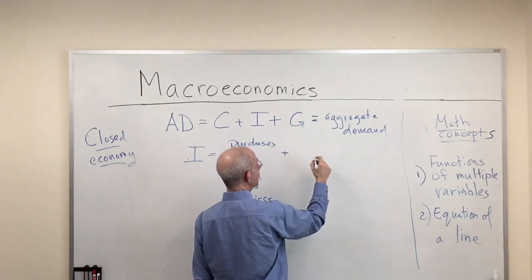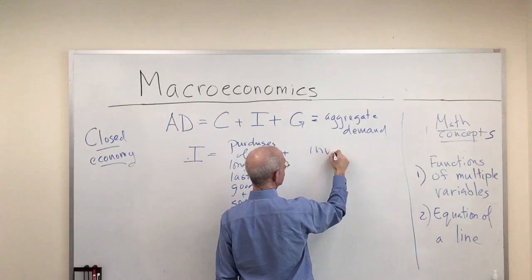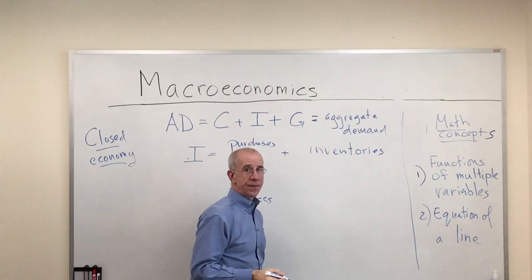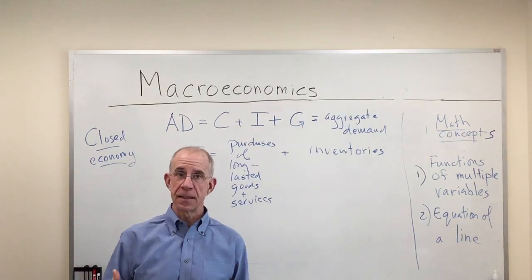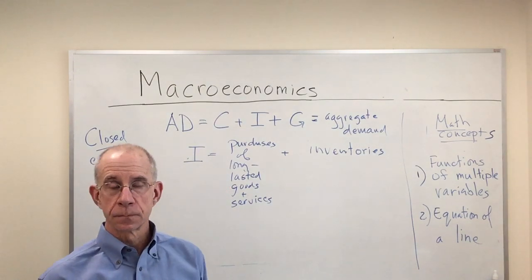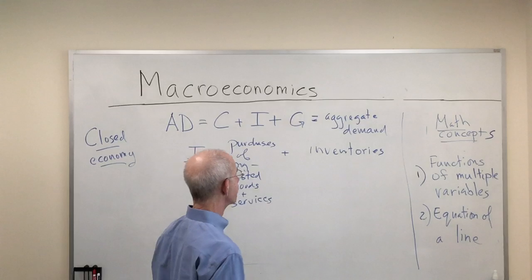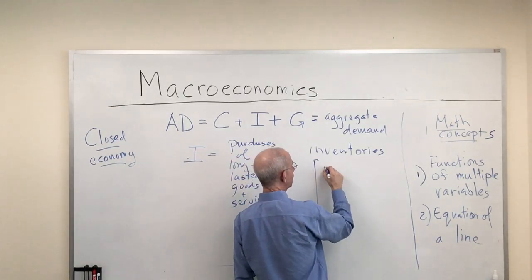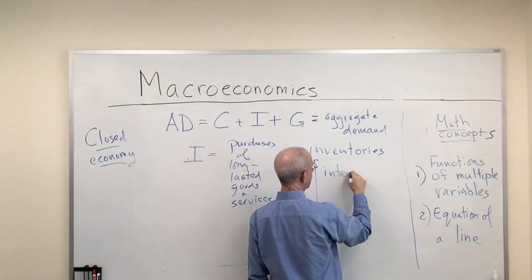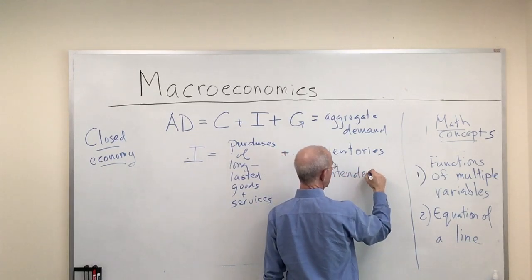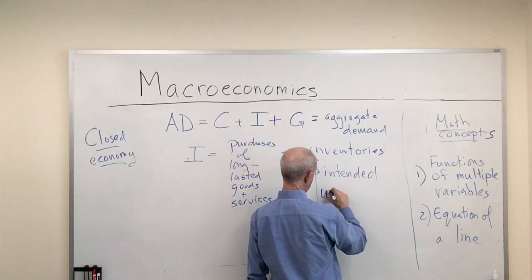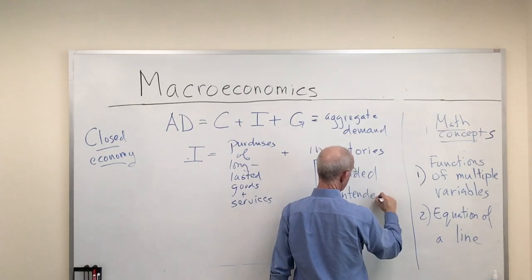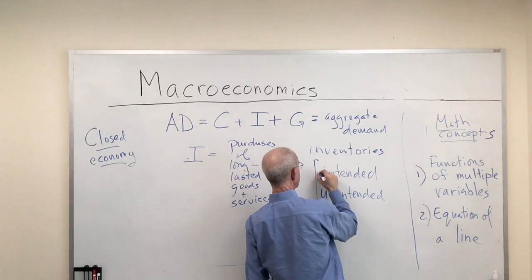And then we talked about there being a component of inventories. These are things that aren't immediately sold. And I mentioned there can be two different types.